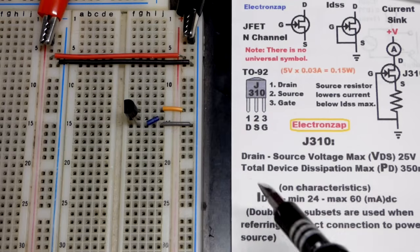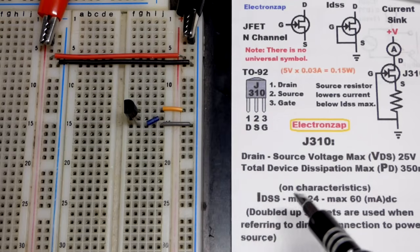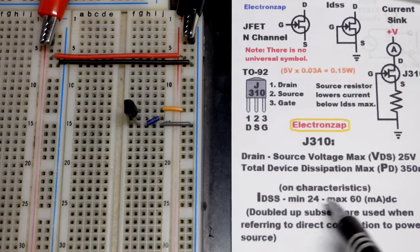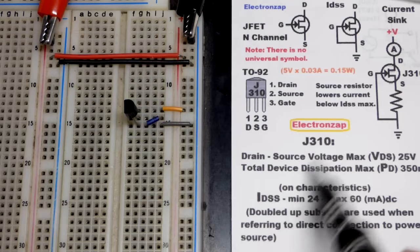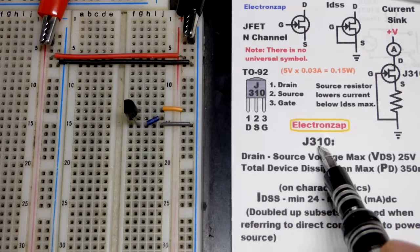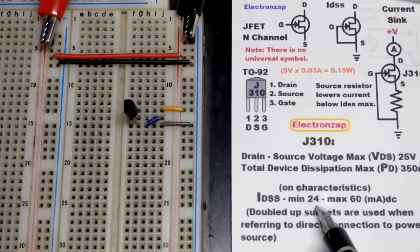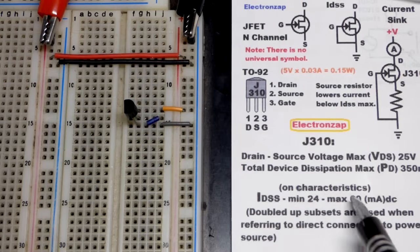There's a range even for J310s, separate ones. Could be down to 24 milliamps current, up to 60 milliamps current. If you have a different N-channel JFET, then it could have a completely different range of currents. You got to make sure and check the data sheet.